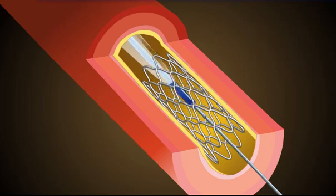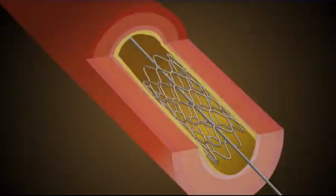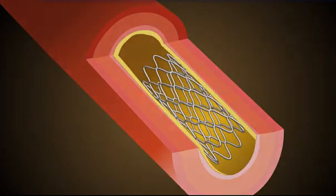The balloon catheter is removed and angiograms are taken to evaluate blood flow through the newly widened artery. Finally, the guide catheter is removed and the procedure is completed.